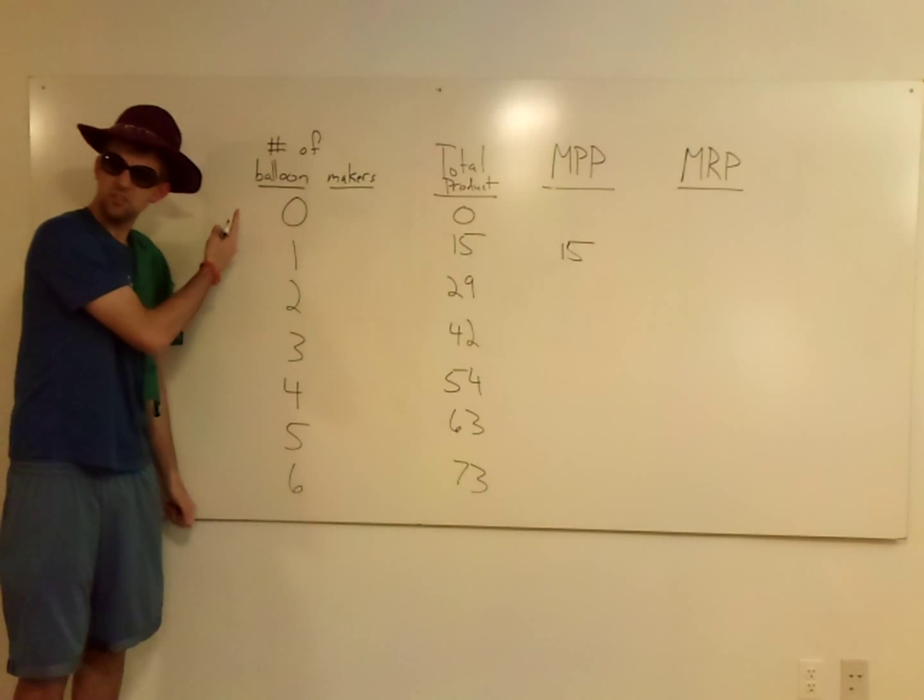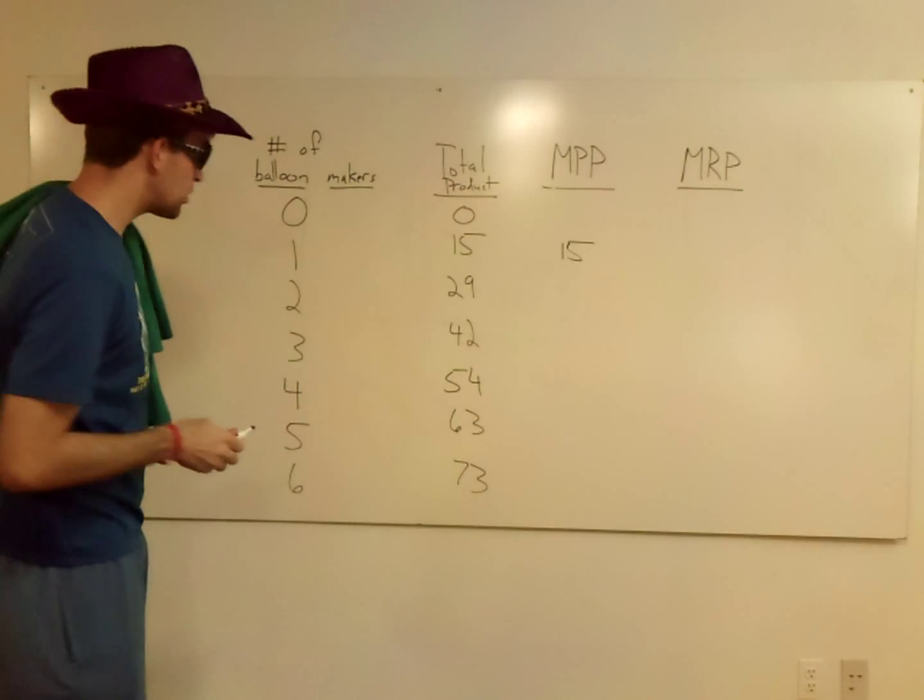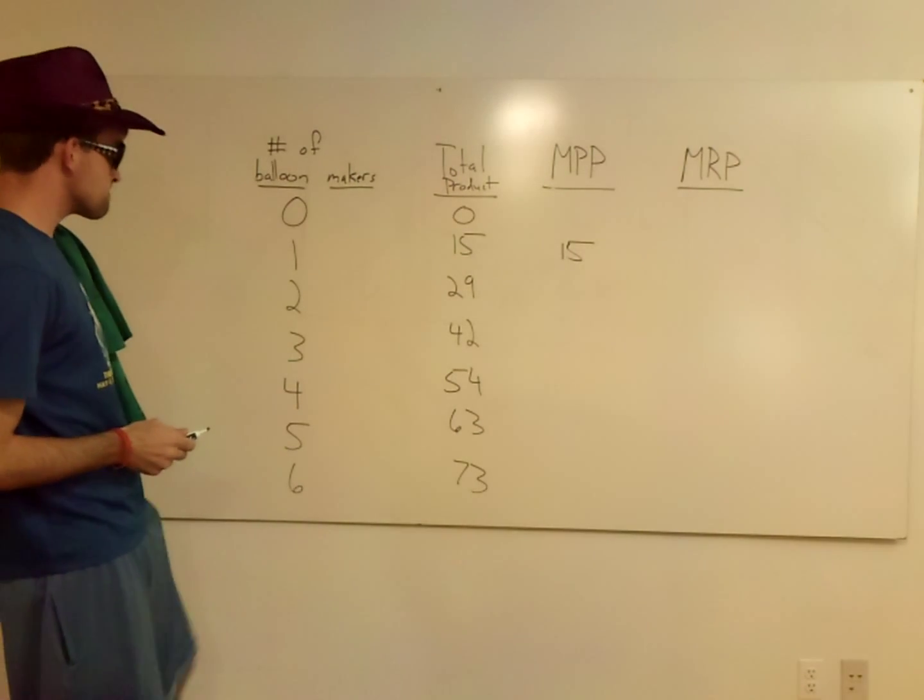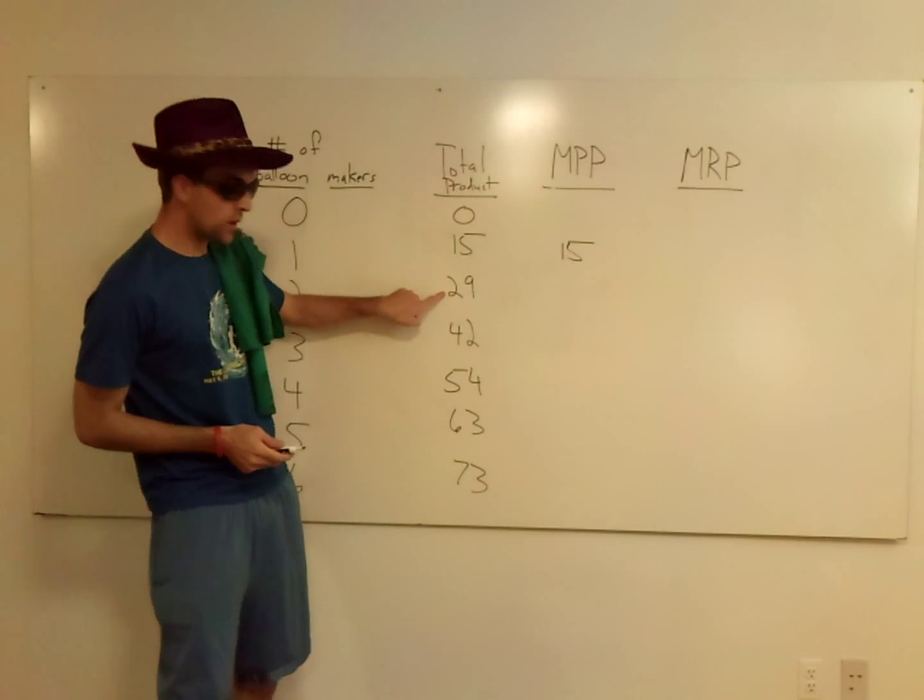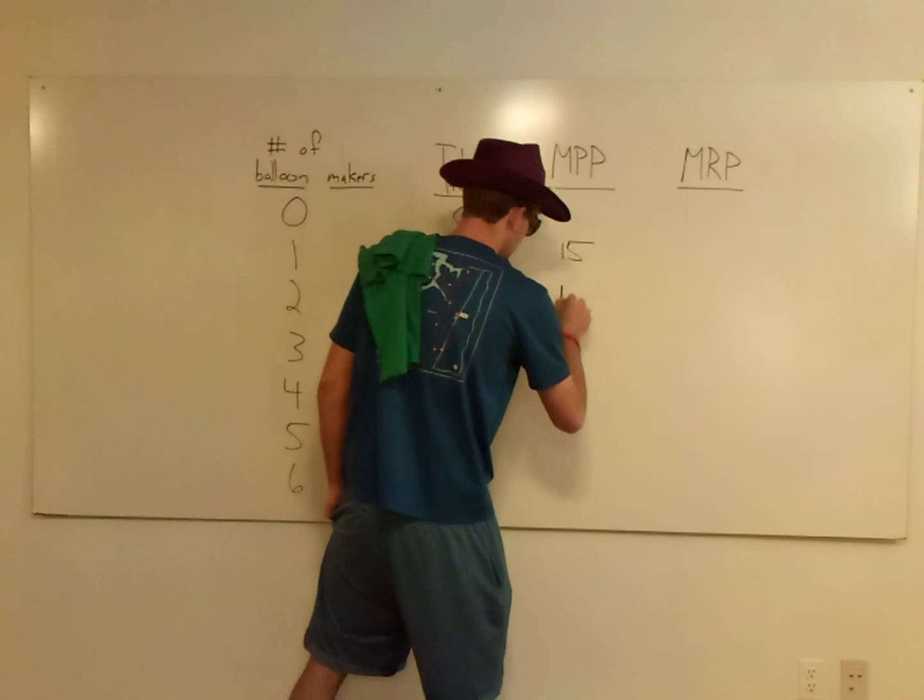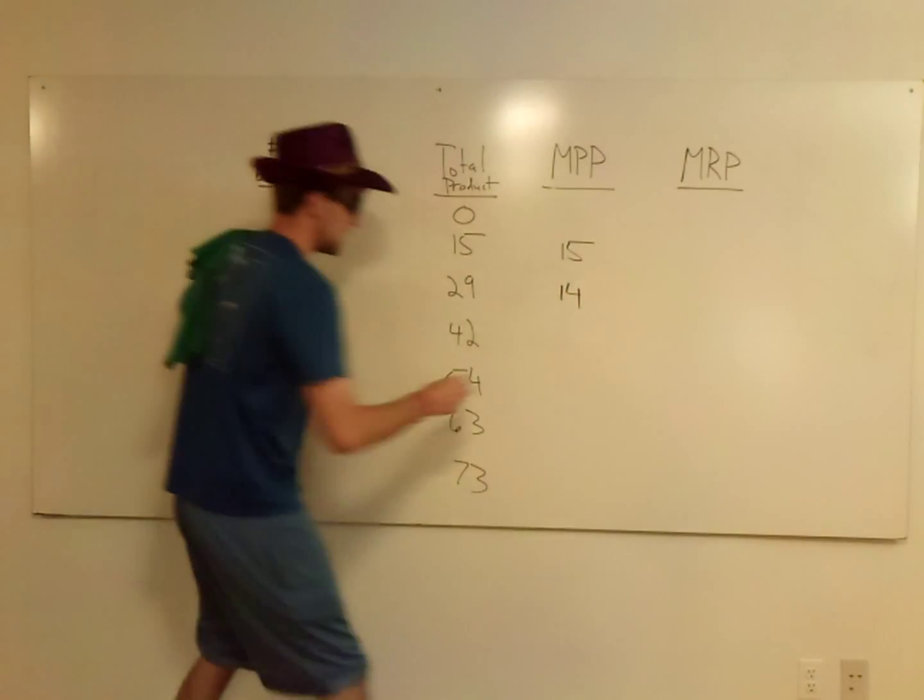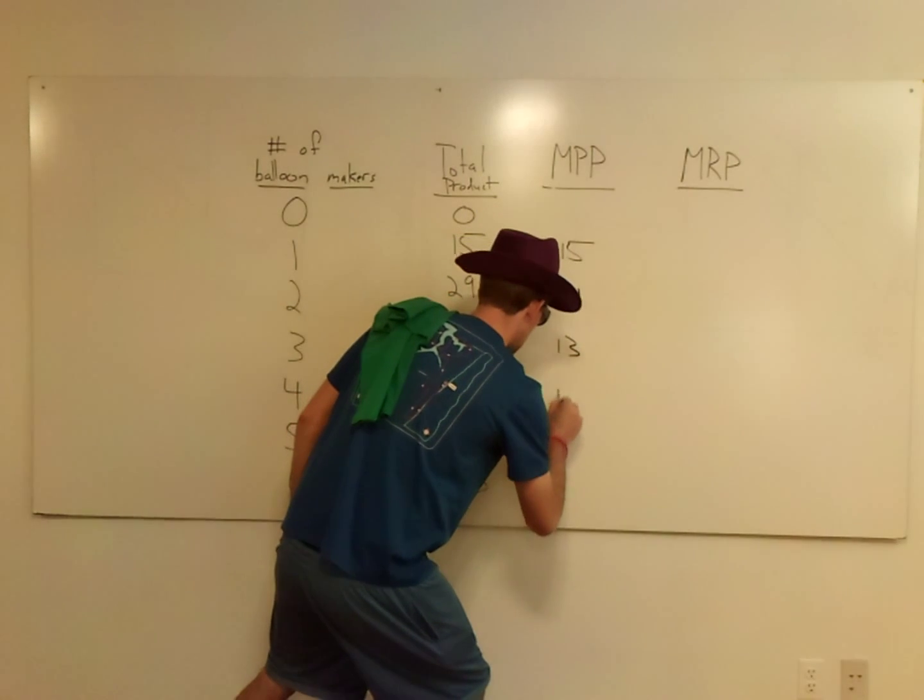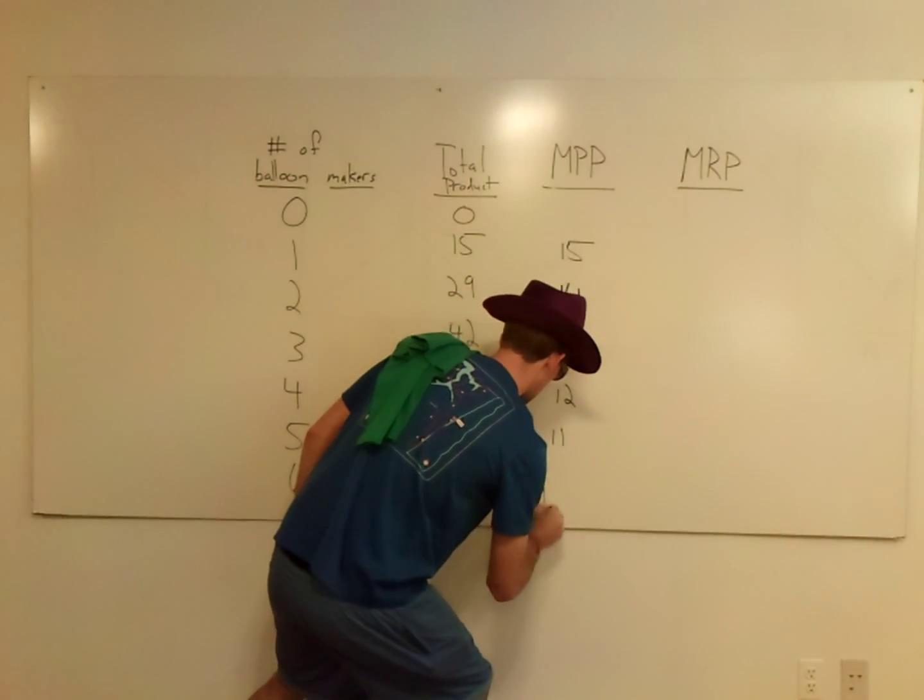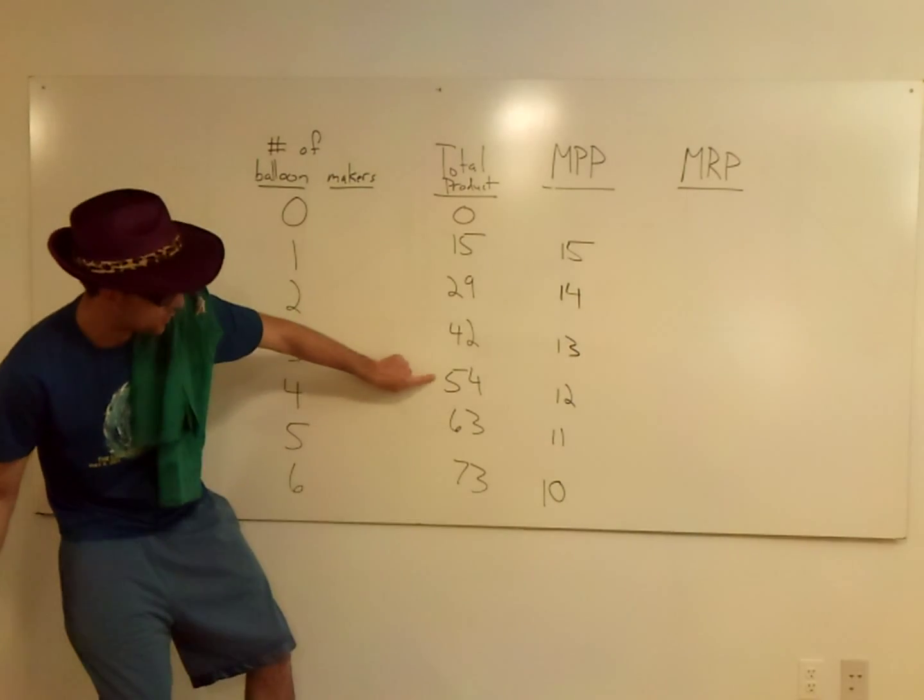Because we're dealing with balloon makers. From 15 to 29, that's when the second worker came in. That's 14. And if you follow me down here, if I set this up right as I intended, it should go 15, 13, 12, 11, and 10, as I do the difference between each one.